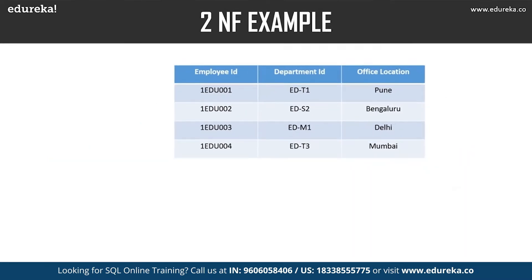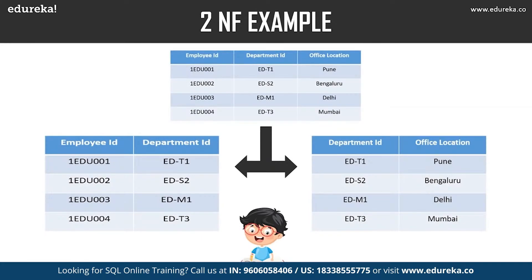The answer is simple: split the table. To bring the table to Second Normal Form, we break it into two parts. The first table has Employee ID and Department ID as columns. The second table has Department ID and Office Location as columns. We have now removed the partial functional dependency. The column Office Location is fully dependent on the primary key of its table, which is Department ID. With that, Second Normal Form is achieved.